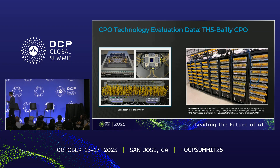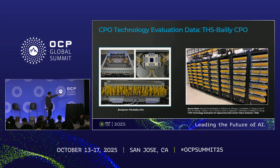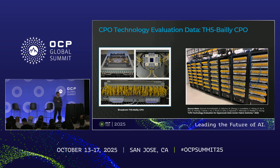So where are we now? Hopefully you saw the CMAX presentation in the morning — they were talking about our Tomahawk 5 Bailey switch. That has a Tomahawk 5 in the middle, with eight 6.4T Bailey engines around it. Each of those engines is FR4.